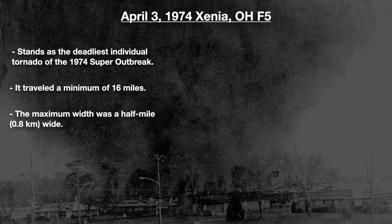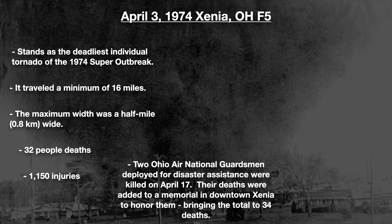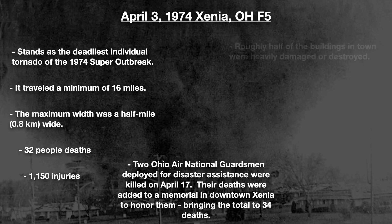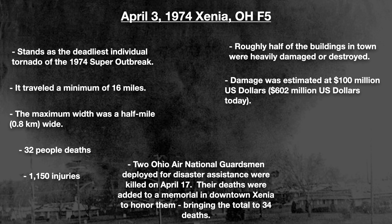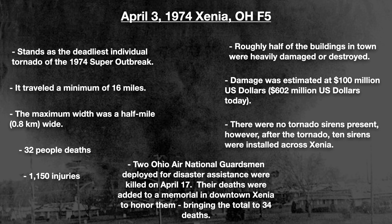In summary, the tornado that struck Xenia, Ohio stands as the deadliest individual tornado of the 1974 super outbreak. It traveled a minimum of 16 miles, with a maximum width of a half mile, or 0.8 kilometers. 32 people lost their lives and about 1,150 people were injured. In addition to the direct fatalities, two Ohio Air National Guardsmen deployed for disaster assistance were killed on April 17th when a fire swept through their temporary barracks in a furniture store. Their deaths were added to a memorial in downtown Xenia, bringing the total to 34 deaths. Roughly half of the buildings in town were heavily damaged or destroyed. Damage was estimated at 100 million US dollars, or 602 million US dollars today. There were no tornado sirens present; however, after the tornado, 10 sirens were installed across Xenia.